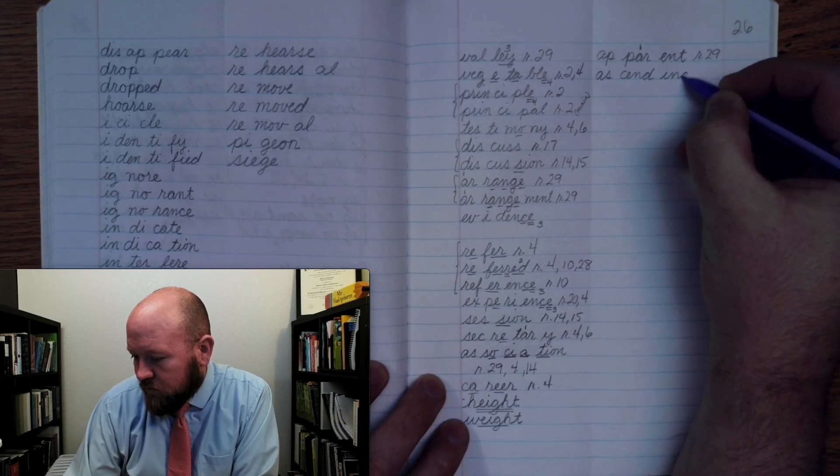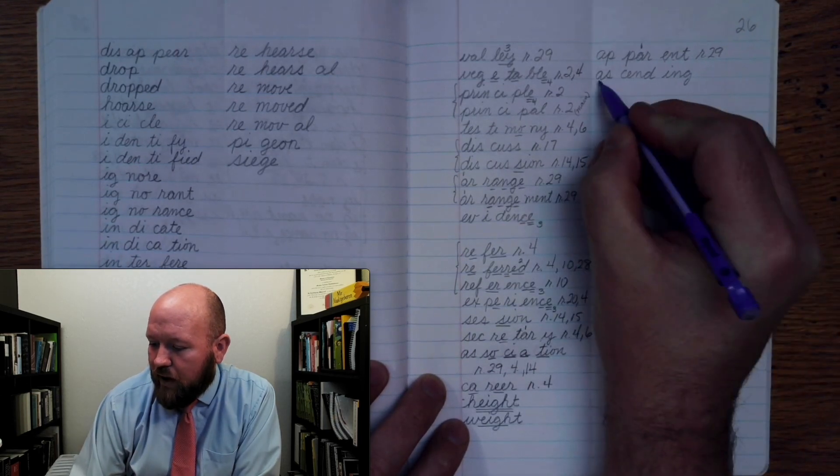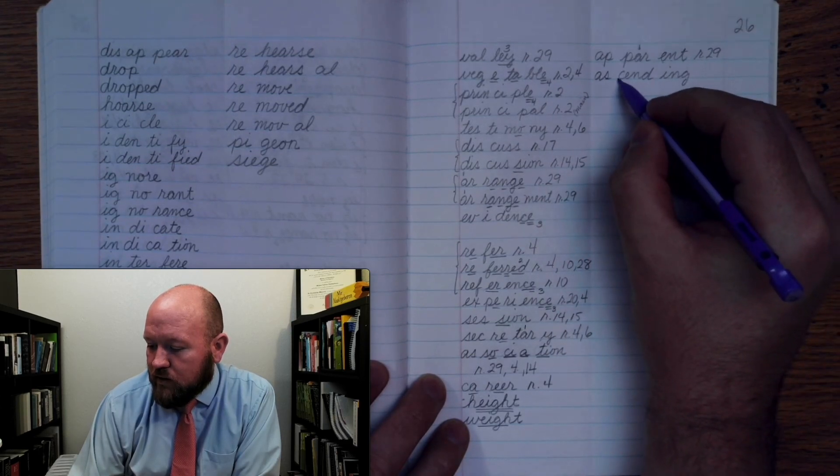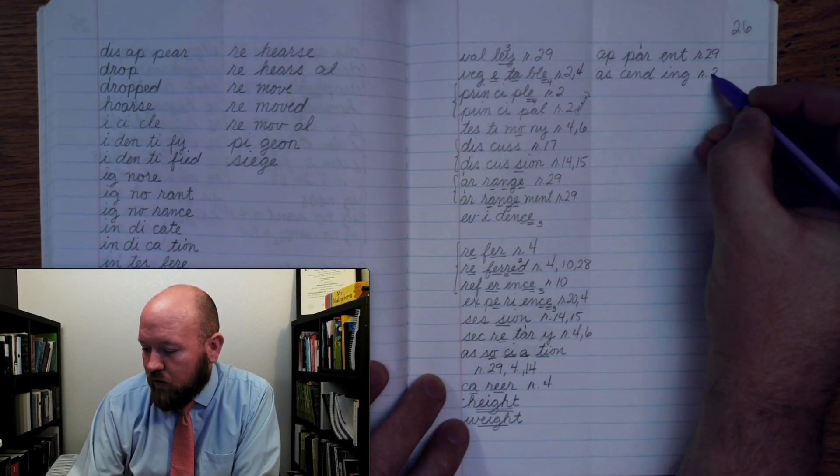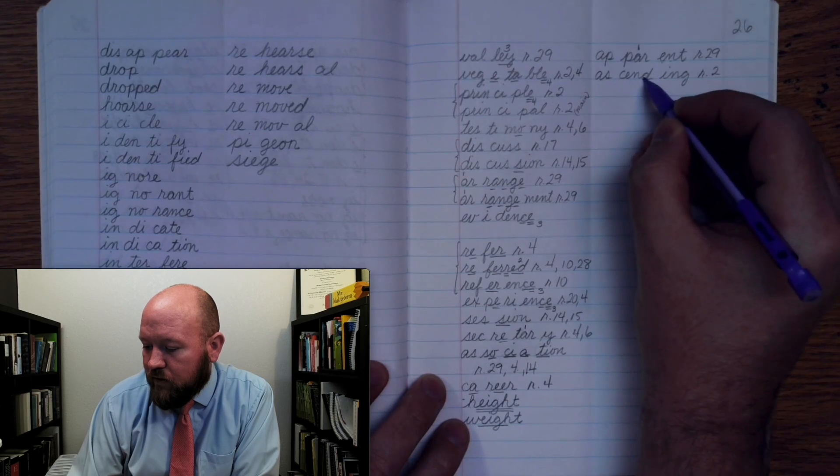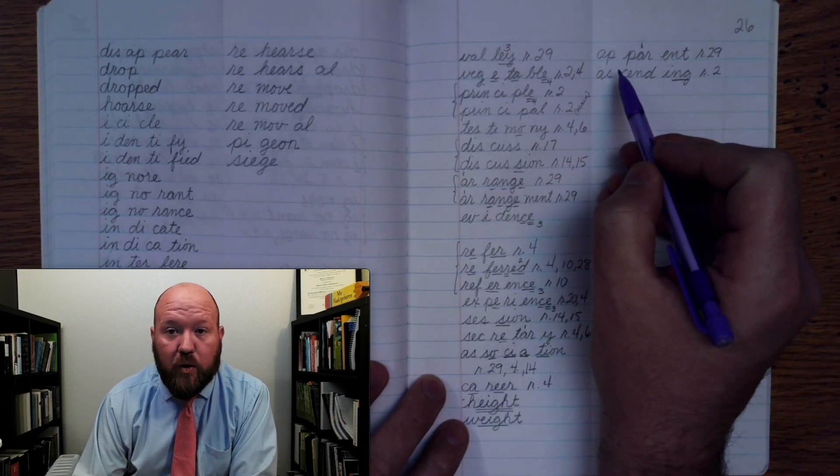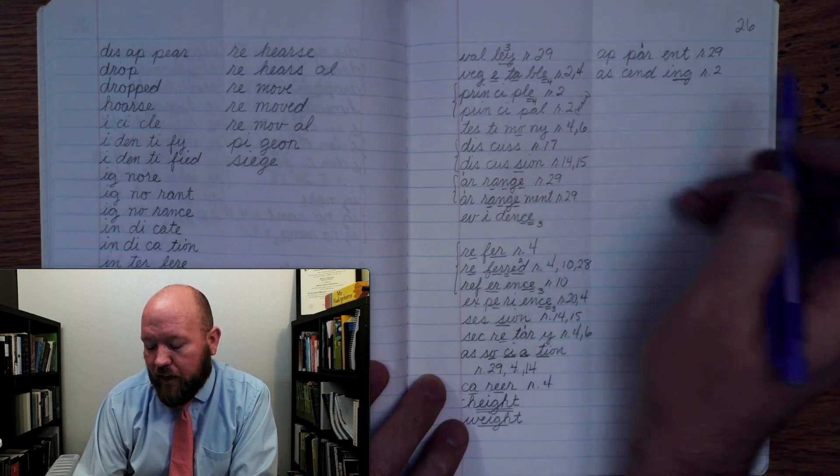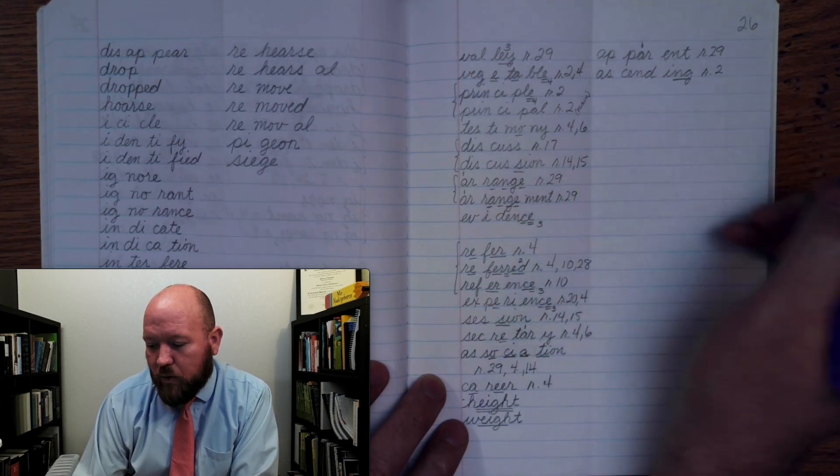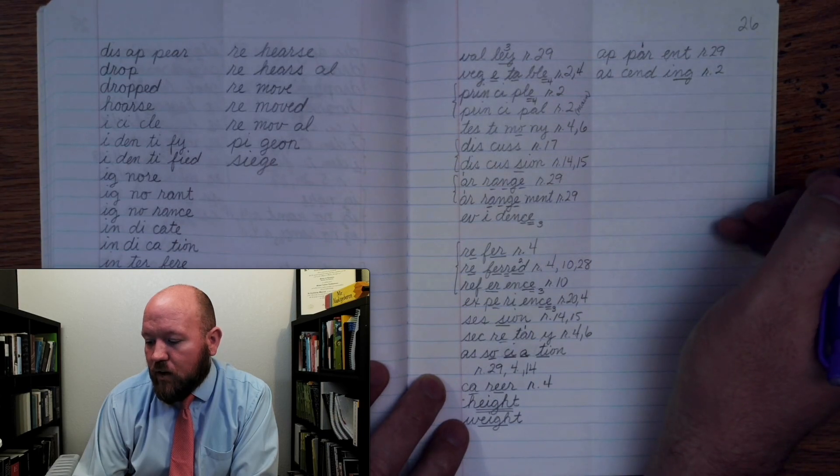Ascending. Rule 2. E, n, d, i, ng once. Now, this normally would be rule 29 because we don't really hear both of these sounds, ascending, but because of different letters, we don't count it rule 29.